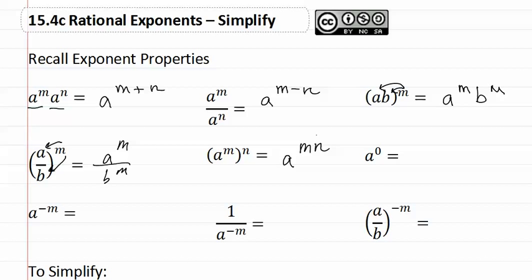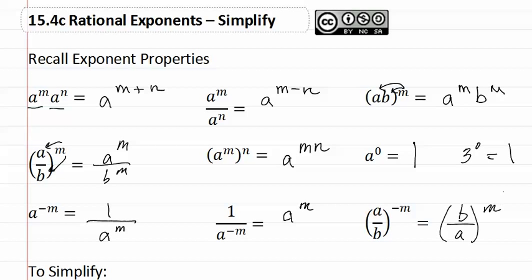It is important to remember that anything to the zero power is just one — for example, three to the zero is still one. If we have a negative exponent, we can move it to the denominator and it becomes positive. The same applies if it is already in the denominator — we move it to the numerator. If we have a negative exponent on a fraction, we simply invert the fraction and change the exponent to positive.